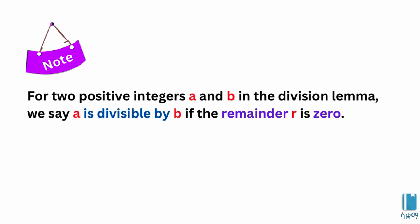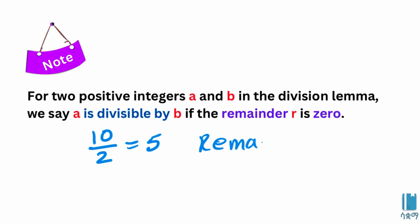Note: For two positive integers a and b, in the division lemma, we say a is divisible by b if the remainder is zero. If the remainder is zero, then 10 is divisible by 2 — remainder is equal to 0.